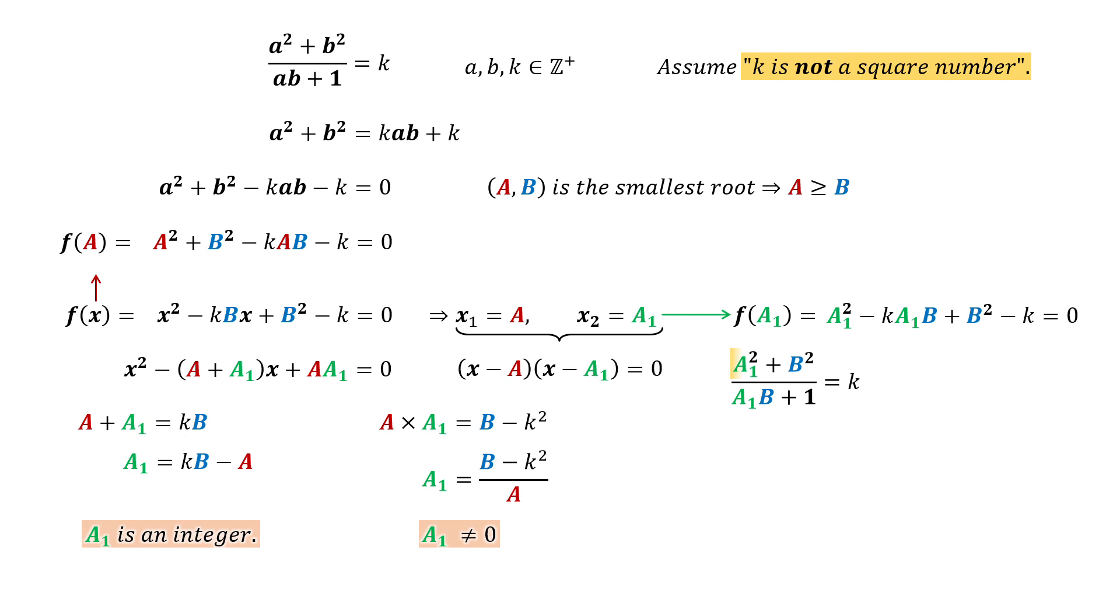The numerator is positive because it is the sum of squares. Since K is also positive, the denominator A1B plus 1 must also be positive.